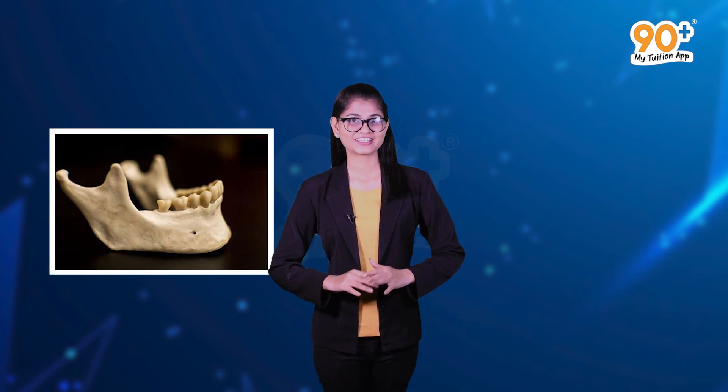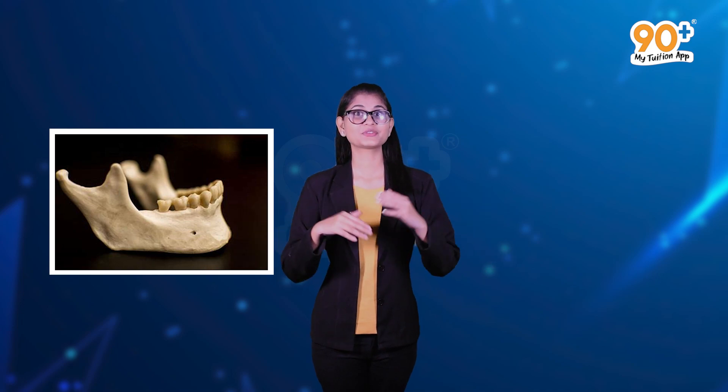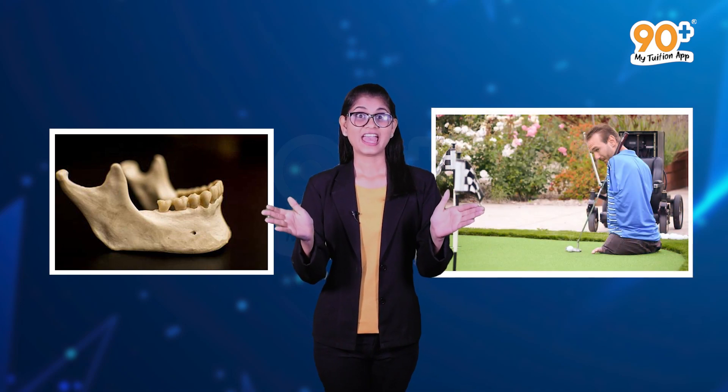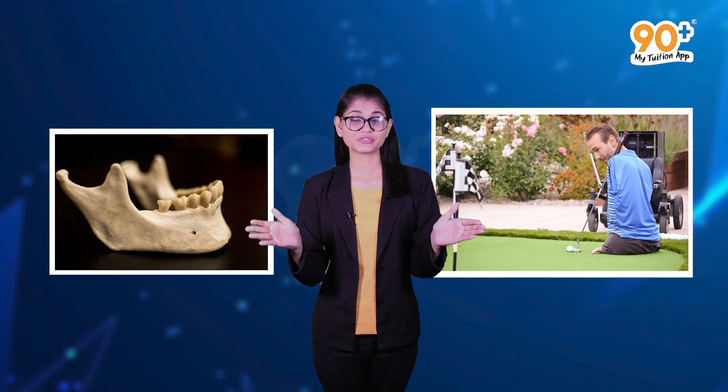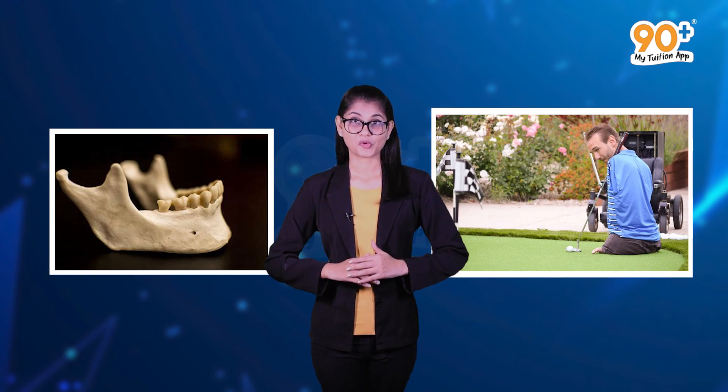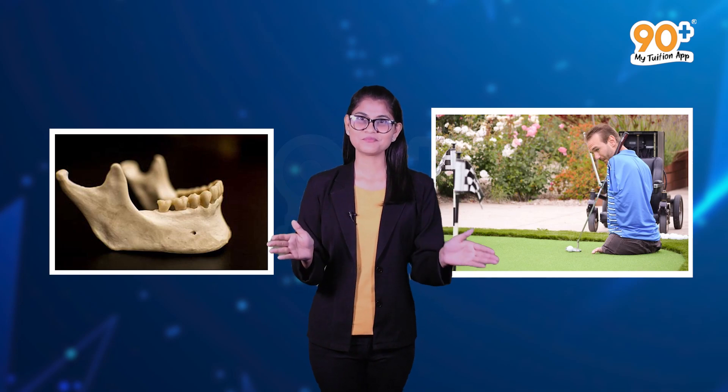The skeletal system has a significant role in the movement shown by the body. But how? Let me give you some examples. Just imagine chewing food without jaw bones and walking around without limb bones — it is so difficult, right? And these jaw bones and limb bones are all parts of our skeletal system which provide shape and support.